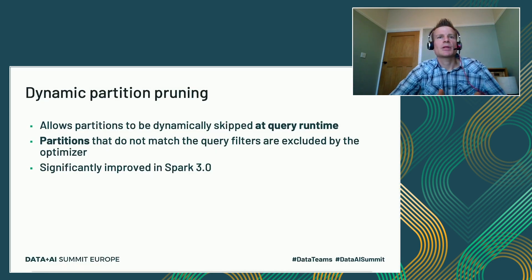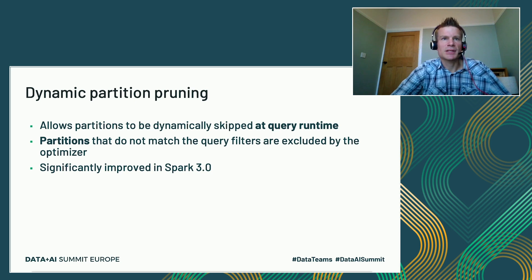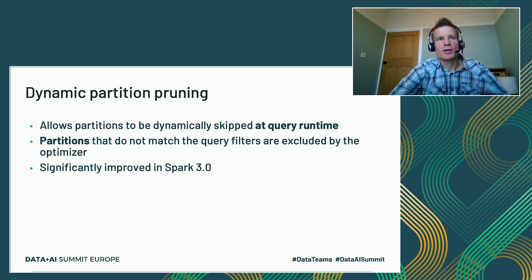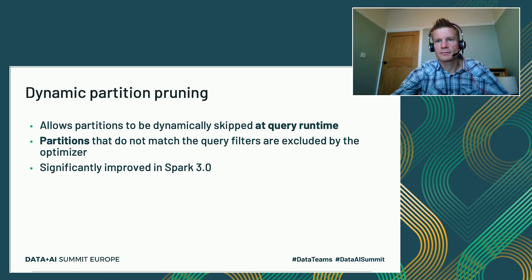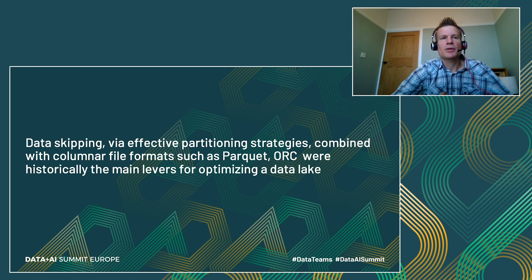Spark introduced dynamic partition pruning, which means if a query has filters on columns that are in the partition structure, those partitions can be skipped if the filter excludes them. For example, if data is partitioned by date and we filter for a specific day or week, Spark can dynamically skip non-matching partitions. This drastically reduces the number of files that Spark has to read from blob storage. Historically, data skipping with effective partition strategies combined with columnar formats like Parquet and ORC were the main ways to optimize a data lake.